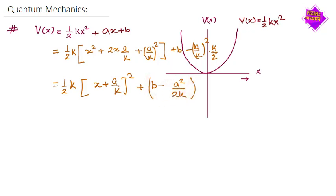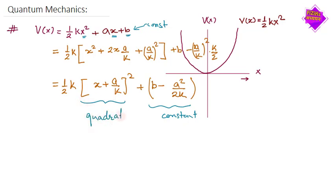So the final form is ½k(x + A/k)² + (B − A²/2k). What we observe is that this is still quadratic, but its mean position is shifted. For the normal harmonic oscillator the mean position was zero. Now we still have a quadratic function but at a different minimum and with a different constant.